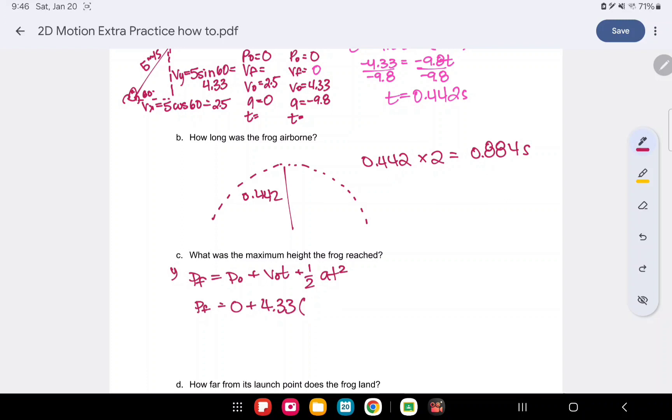We know that the maximum height took 0.442 seconds to get to the top. And we can use 1 half gravity. And then we're going to multiply it by time again, 0.442 squared. Plug all of that into a calculator, and you'll get your pf. And that gives us 0.956 meters. So it gets a little under a meter tall in its jump.